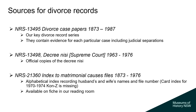Our main series of divorce records is NRS 13495, Divorce Case Papers, 1873 to 1987. These contain the judicial separations as well as other documents such as affidavits, and we hold the original divorce case papers for 1873 to January 1969. Our next key series is NRS 13498, Decree Nisi, 1963–1976 — official copies of the Decree Nisi from the Supreme Court. We also have NRS 21360, the Index to Matrimonial Causes Files, 1873–1976, an alphabetical index recording the husband's and wife's names as well as the file number.